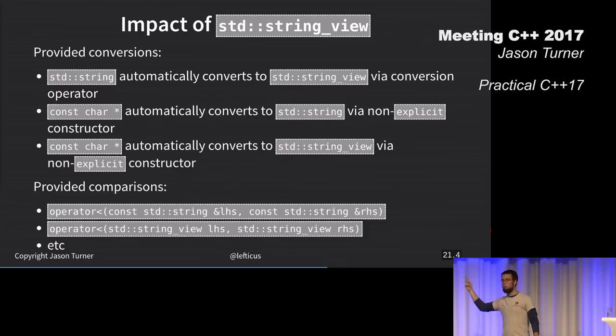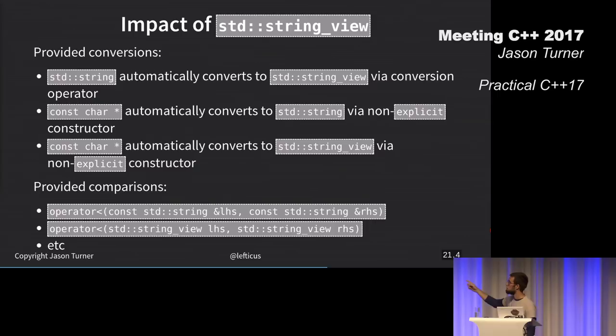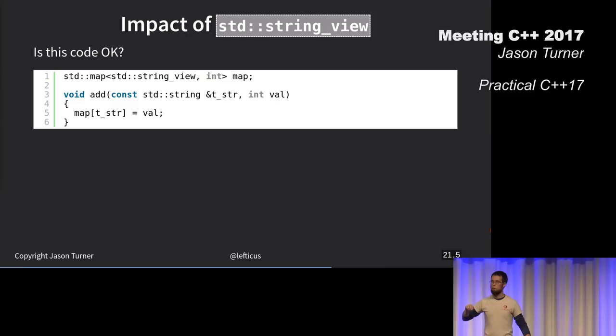Const char stars can automatically be converted to string views also via a non-explicit constructor, but at least this doesn't allocate anything. If one were to compare a string to a string view, one of them must be implicitly converted to the other for the comparison operator to work. We know that we have an implicit conversion from string to string view. Is this code okay?